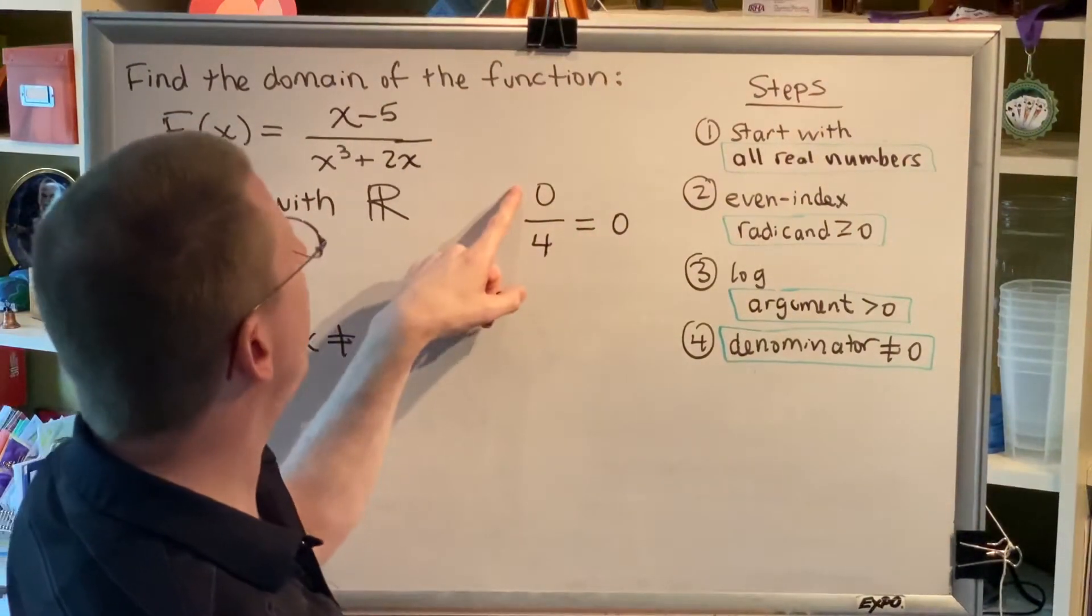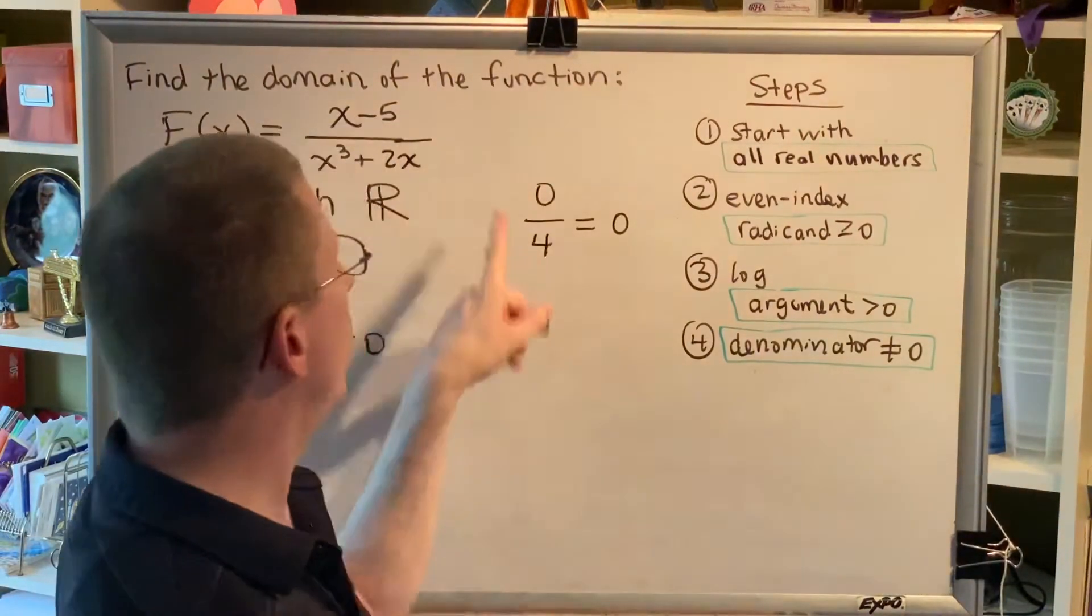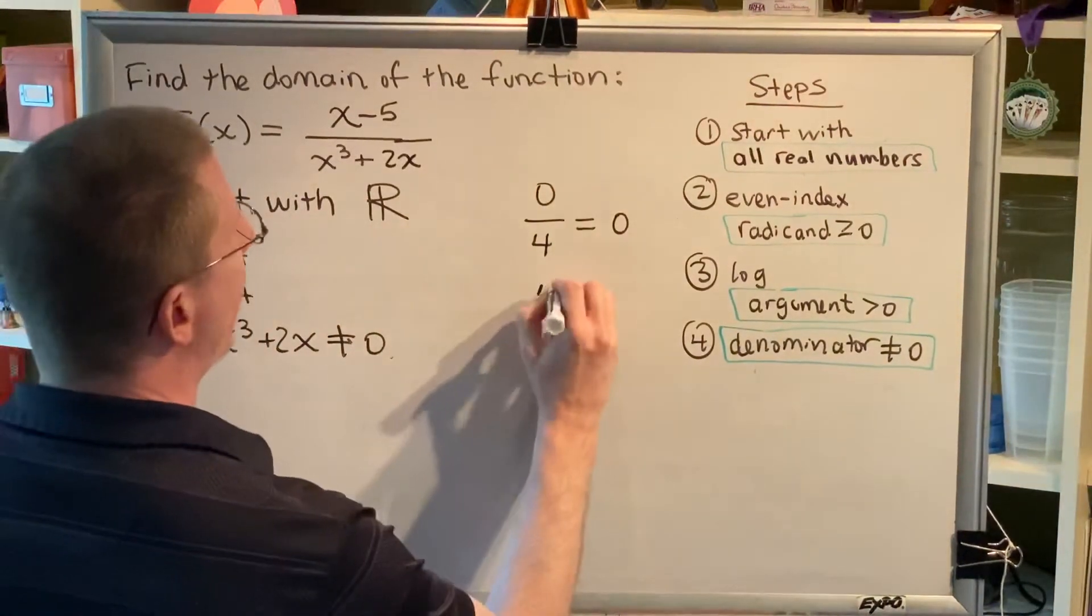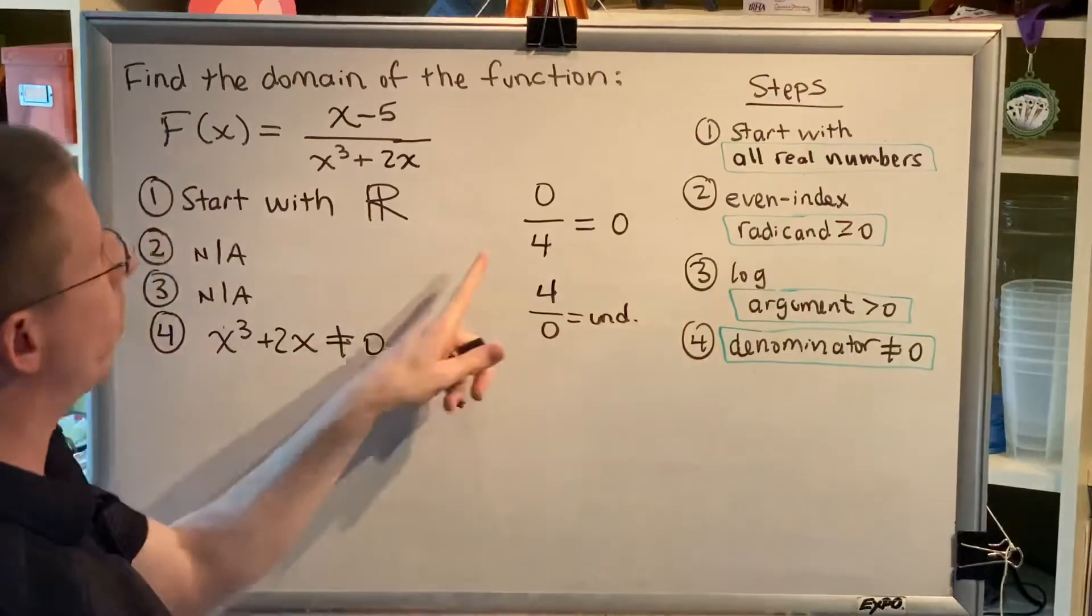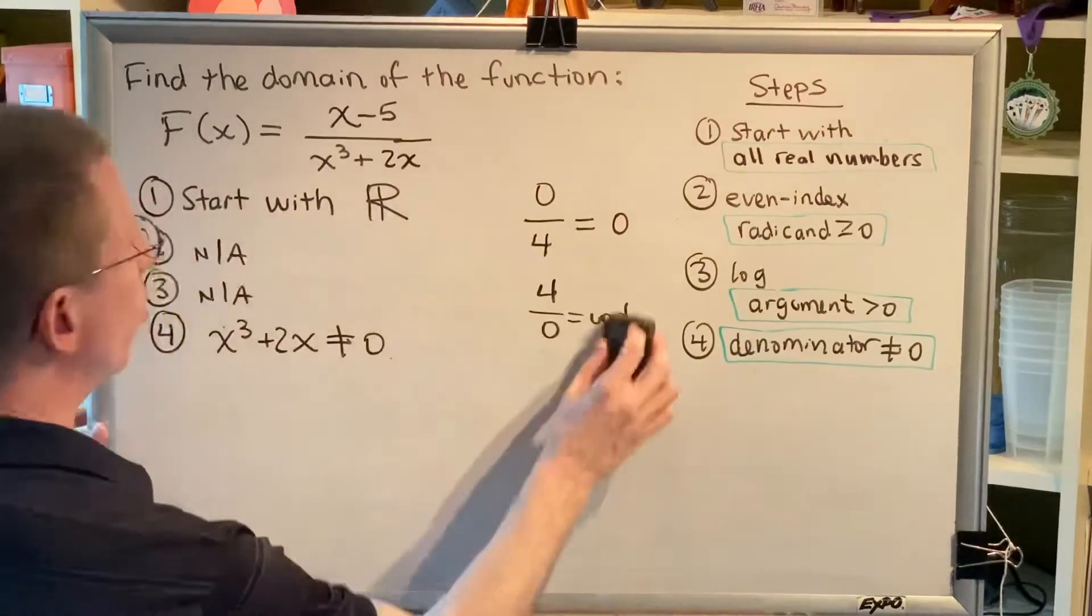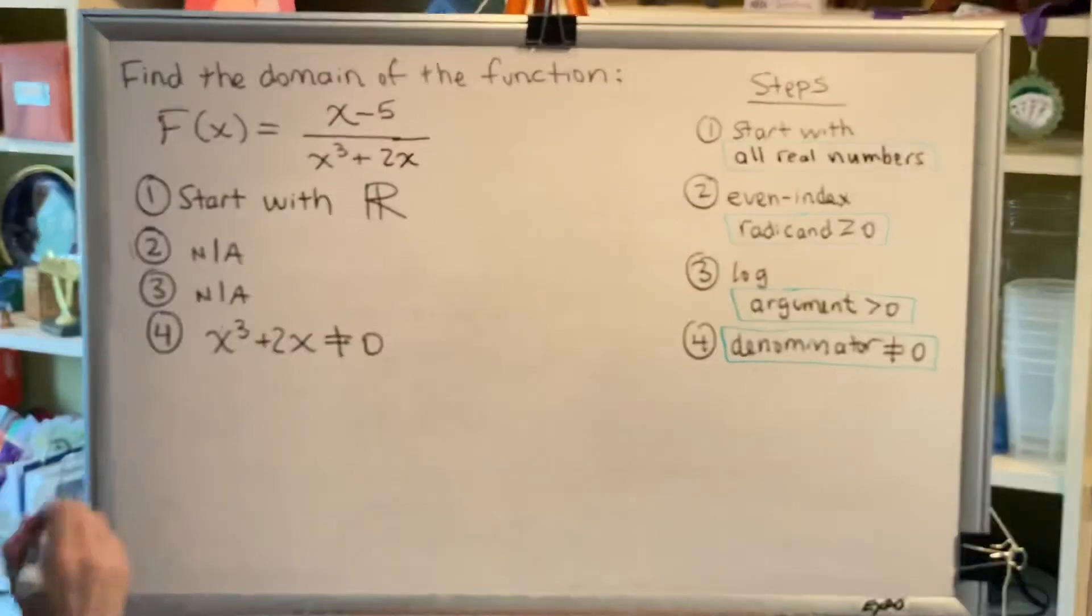Remember, a numerator tells you how many of something you have, the denominator tells you what type. So if you have 0 fourths, that just means you have 0. It's only when a denominator is 0 that we have a problem. 4 divided by 0 is undefined. So, in this problem, we set only the denominator to be not equal to 0 and solve.